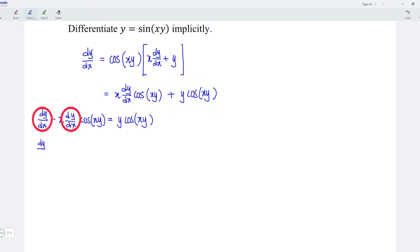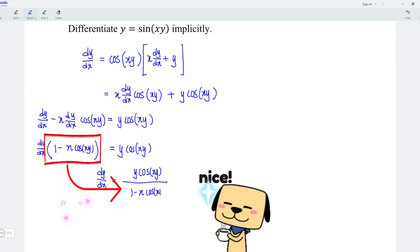Factor out dy dx and we get 1 minus x cos xy. And this is equal to y cos xy. Which means that dy dx is equal to y cos xy divided by 1 minus x cos xy.